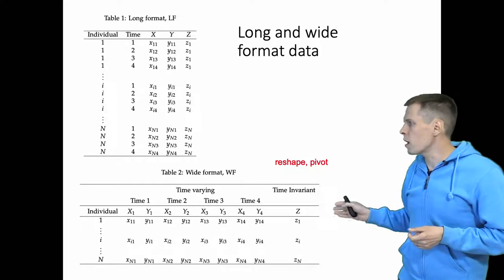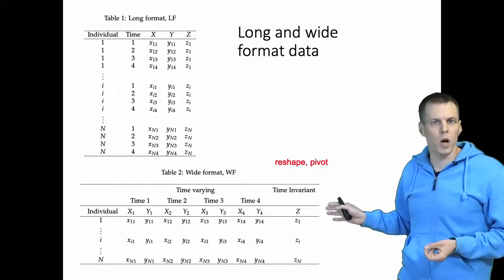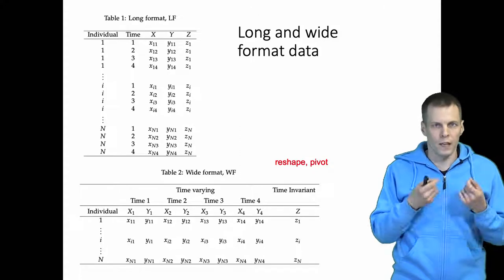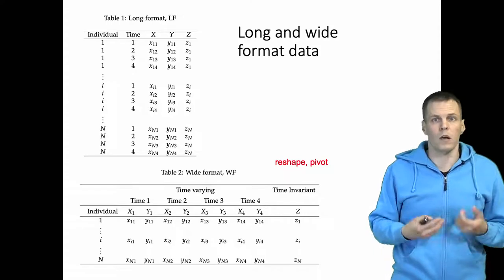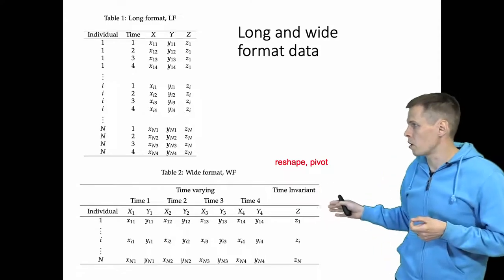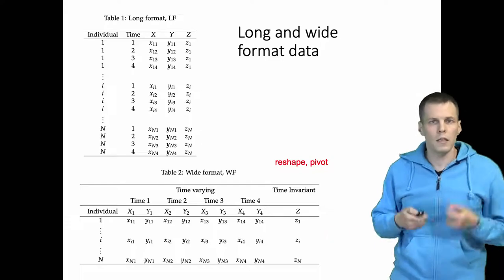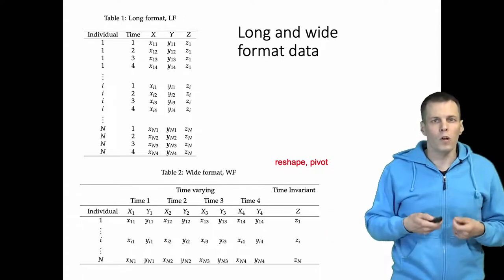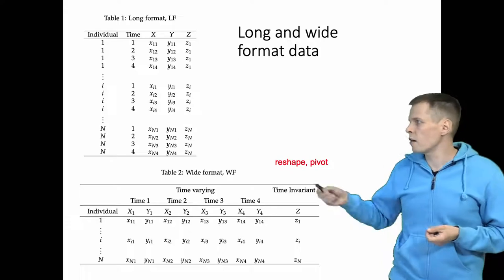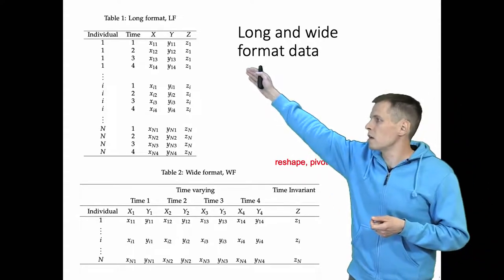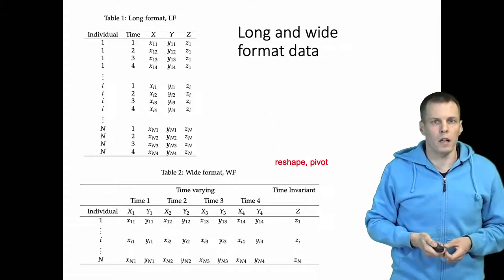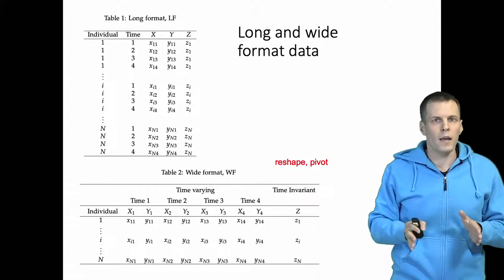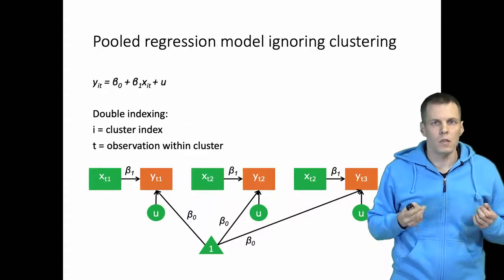How do you use wide format data to estimate models with an unobserved effect, such as a random intercept model? Let's first look at how we estimate a pooled regression analysis. The idea is that we just regress Y on X and perhaps Z. In this example I'll use Y and X only, omitting Z for simplicity. This is the pooled cross-sectional analysis ignoring clustering.